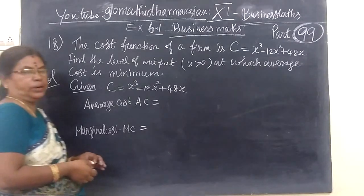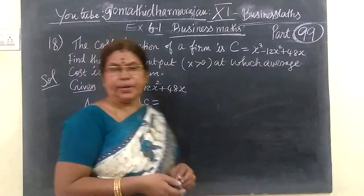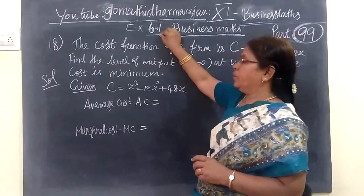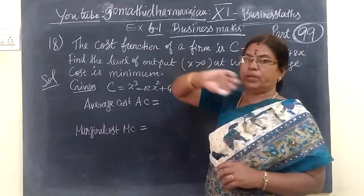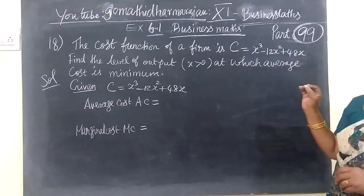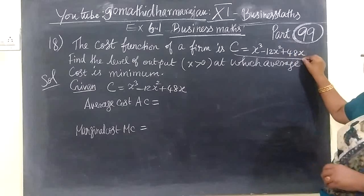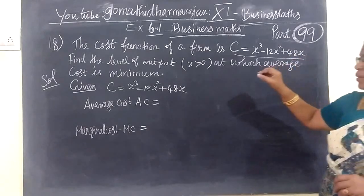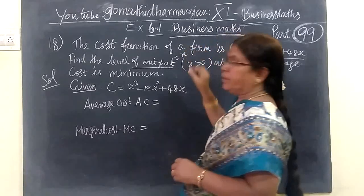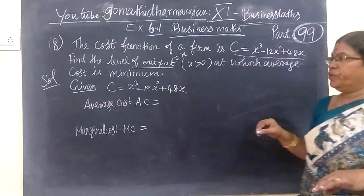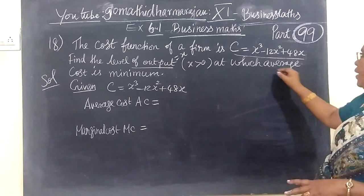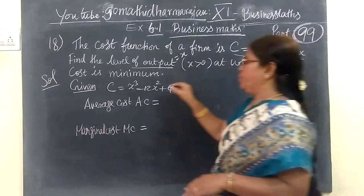Coming to the next question, question number 18. This is the last question in F5 6.1. The cost function of F5 is given. You have to find the level of output. The level of output is the best one — at which the average cost is minimum.